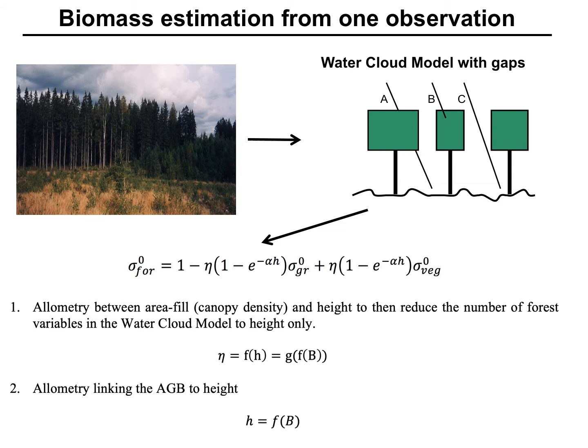Now if we want to retrieve forest biomass from an observation of the backscatter, we want to use a parametric model that expresses the forest backscatter in terms of horizontal and vertical properties of the forest. These are quantified by the two variables canopy density eta and vegetation height h, but here we have the problem that we are not really relating to biomass. So a further step we need to do in this model is to introduce two allometries: one that relates canopy density to height, and one that relates height to biomass.